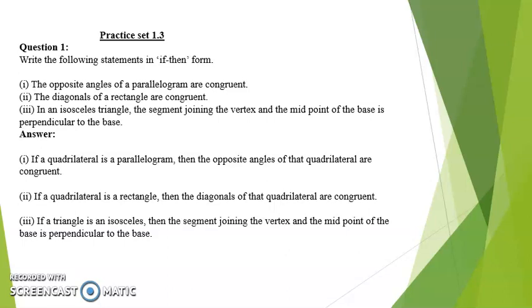Second. The diagonals of a rectangle are congruent. Answer: If a quadrilateral is a rectangle, then the diagonals of that quadrilateral are congruent.